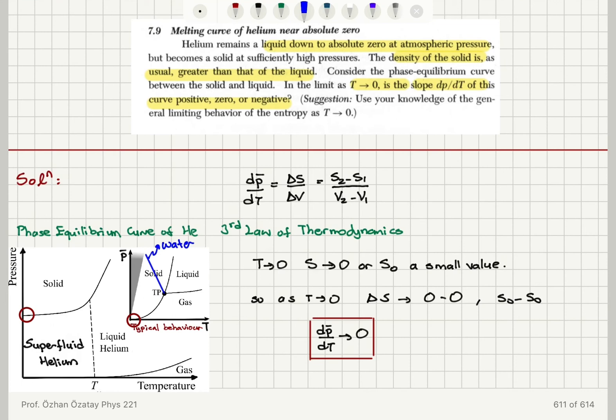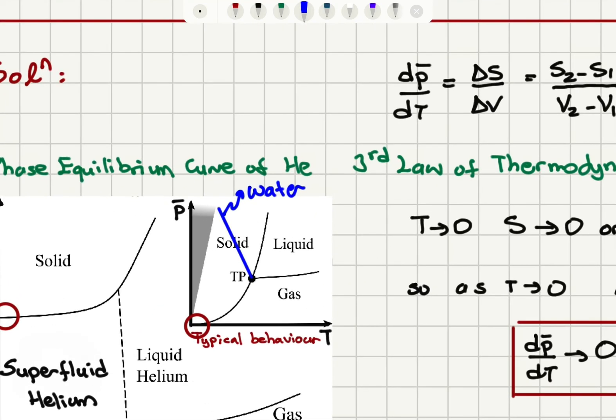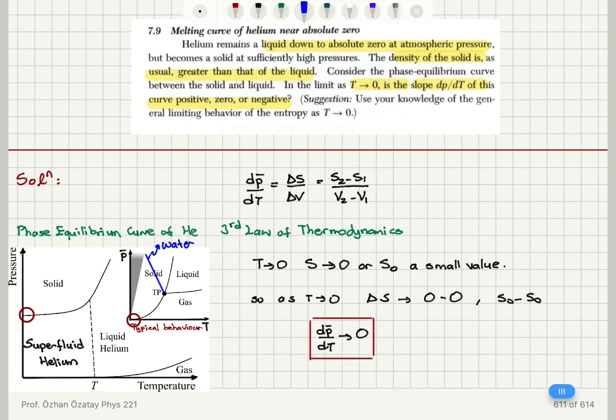we have the typical behavior, so we have the positive slope in this part of the helium phase equilibrium curve, but for water we had the atypical behavior. In summary,